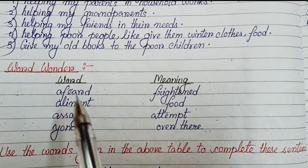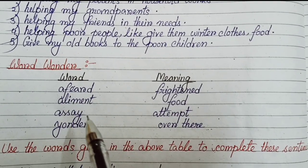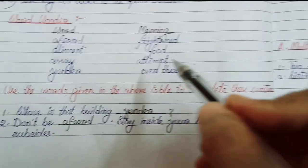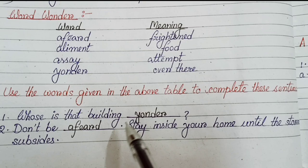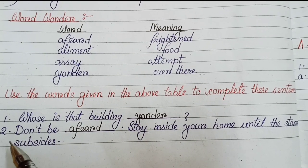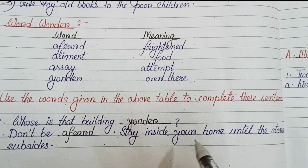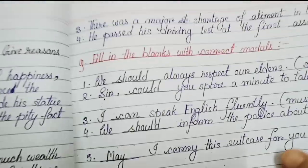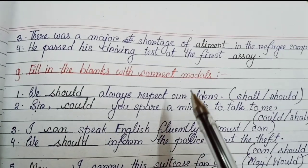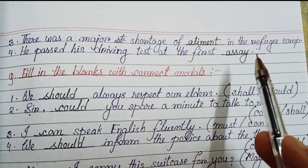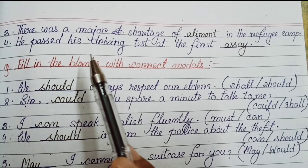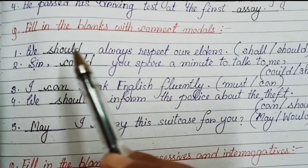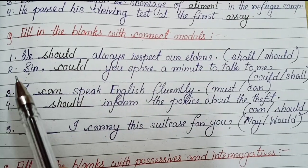Next, word meanings: glow. Fill in the blanks. To court - to have a feared or frightened alignment. Food. Assay - attempt. Yonder - over there. Number one: Whose is that building yonder? Number two: Don't be afraid, stay inside your home until the storm subsides. Number three: There was a major shortage of food in the refugee camp.